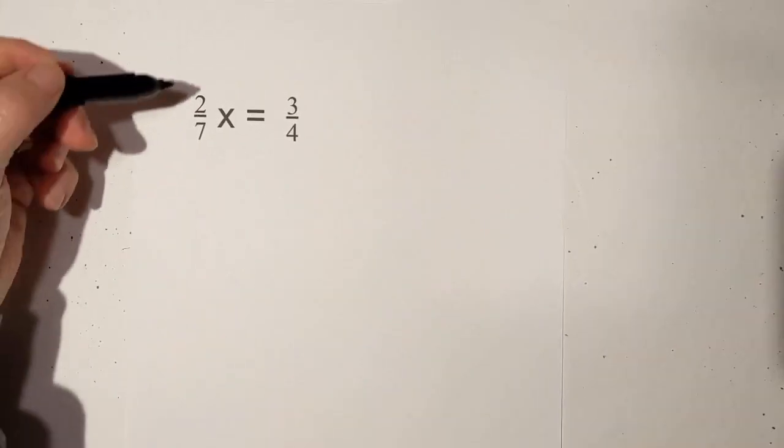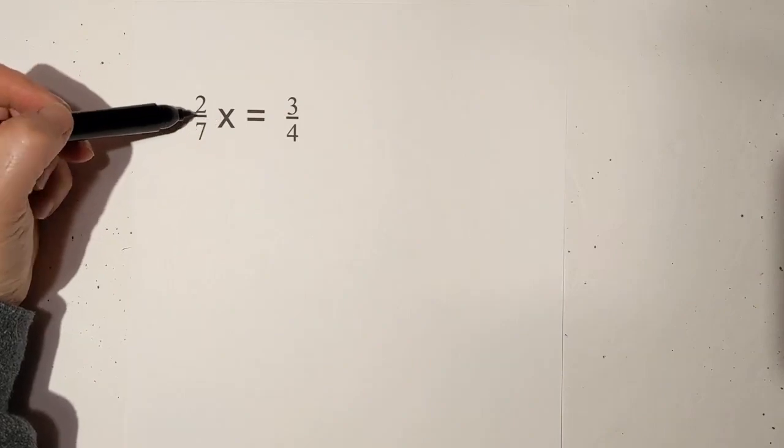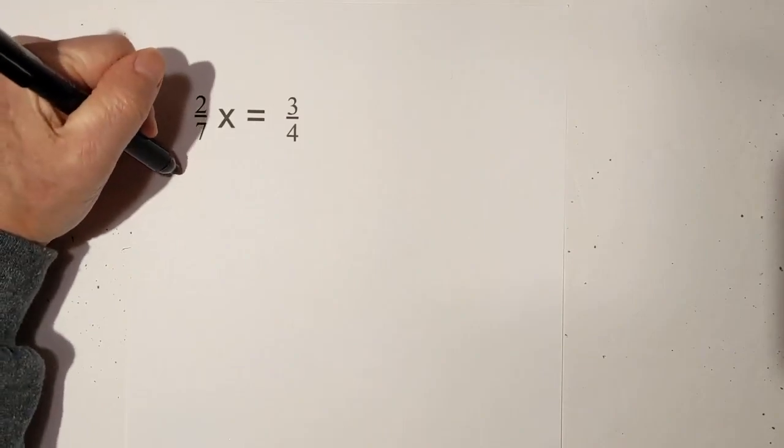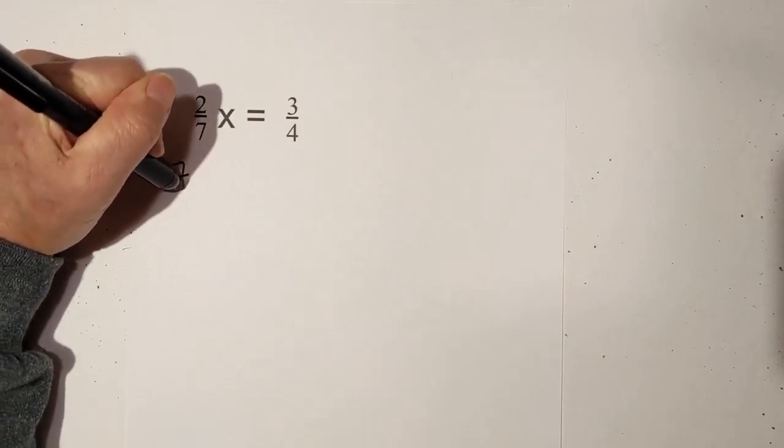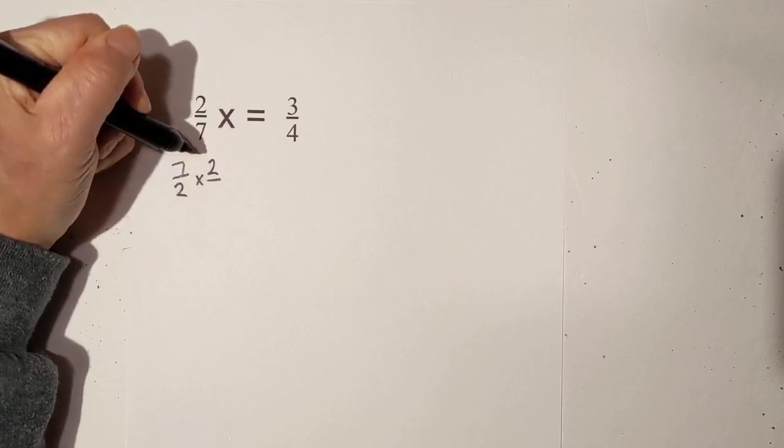Our last one, let's see what we can do here. We need the coefficient in front of x to be 1. So in order to accomplish that goal, we can multiply 2 sevenths by its reciprocal, which is 7 over 2.